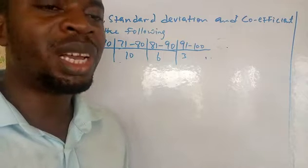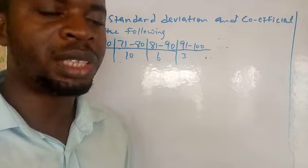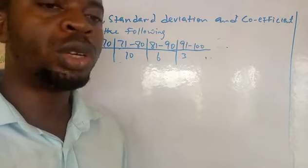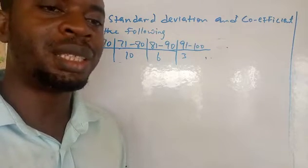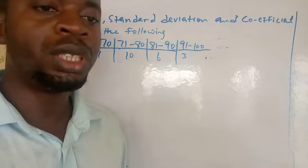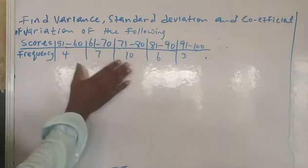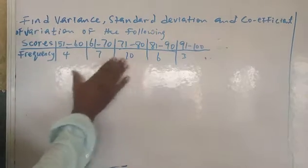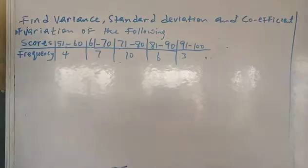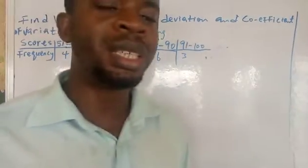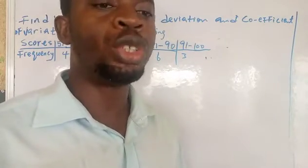I would like to quickly differentiate between grouped data and ungrouped data. Grouped data is data that is given in a table, like what we have here. Ungrouped data is data that is given without using a table.